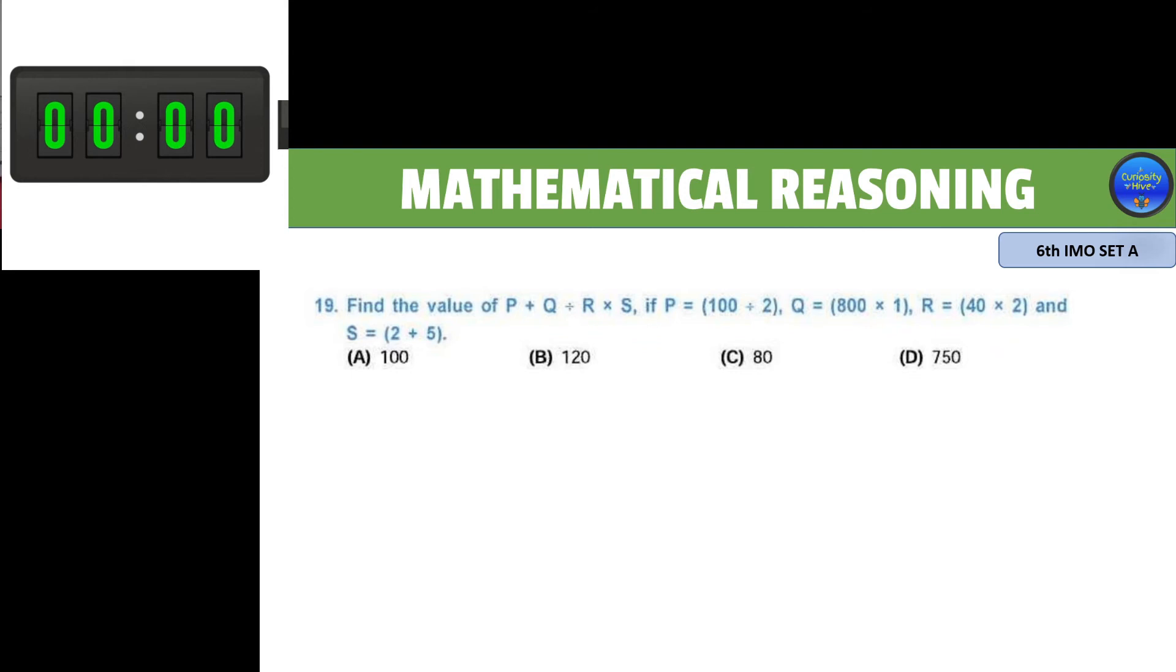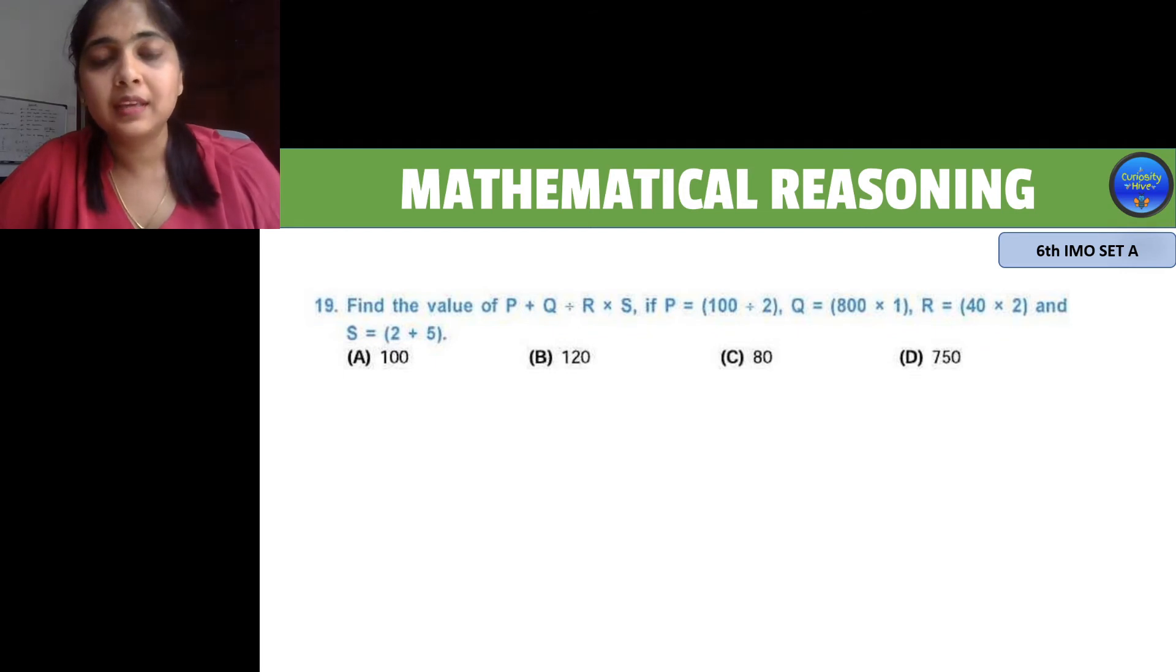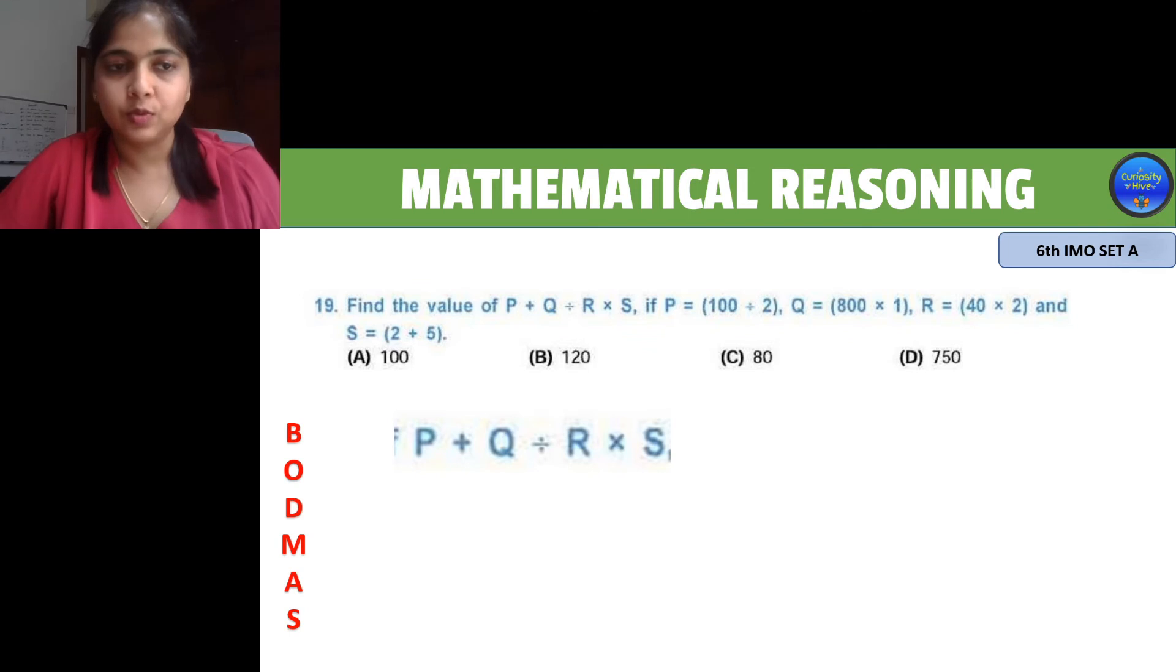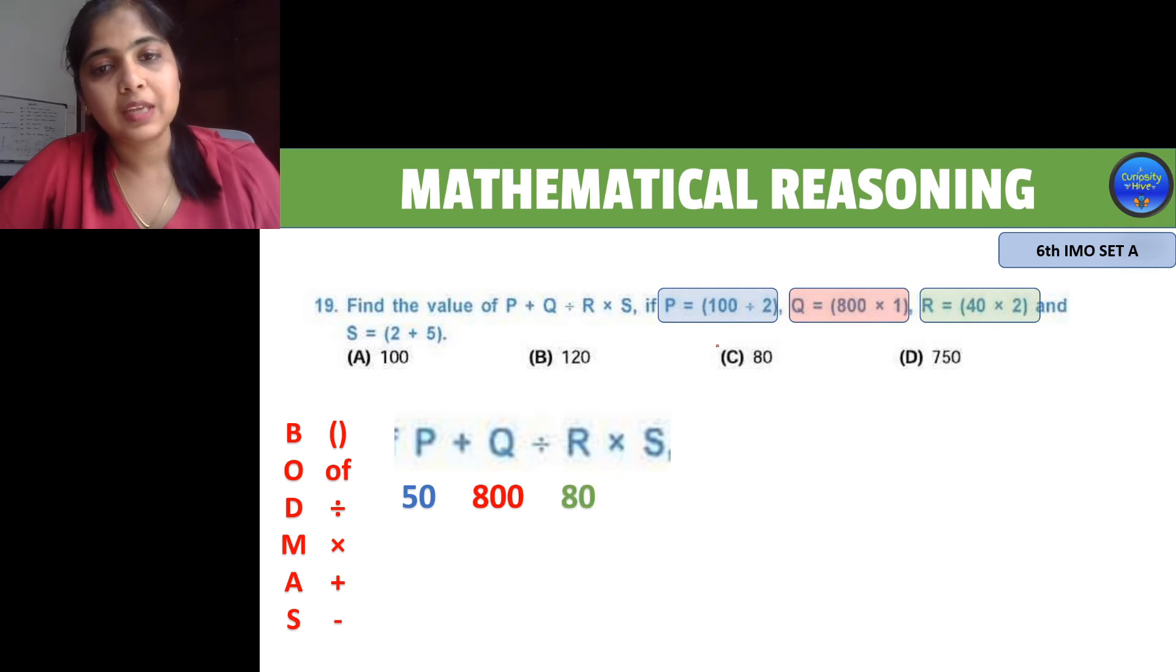This is an easy question, but the important thing is the science of equation and the order in which we need to solve. Remember the order of BODMAS, which is bracket, of, division, multiplication, addition, and subtraction. This is the order we need to solve. Hence, division is the first operation. But before that, let's find what is P, Q, R, and S. P is 100 divided by 2, which is 50. Q is 800 times 1, which is 800. R is 40 times 2, which is 80, and S is 2 plus 5, which is 7.